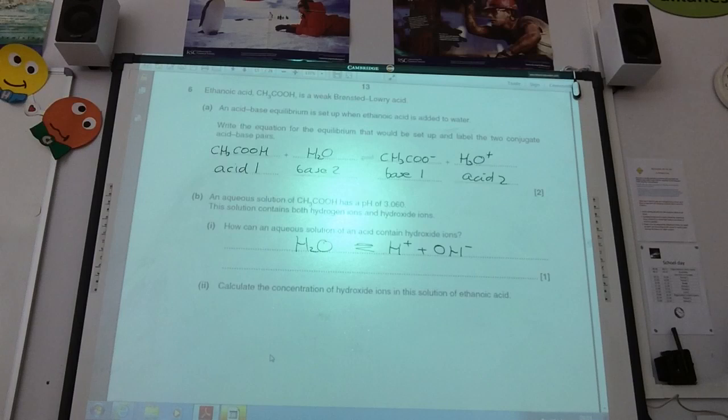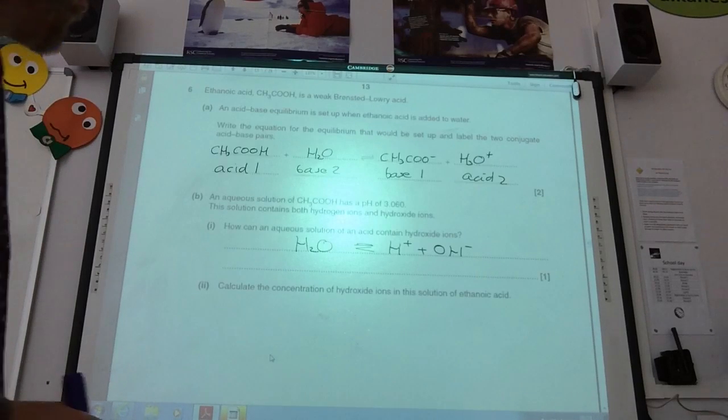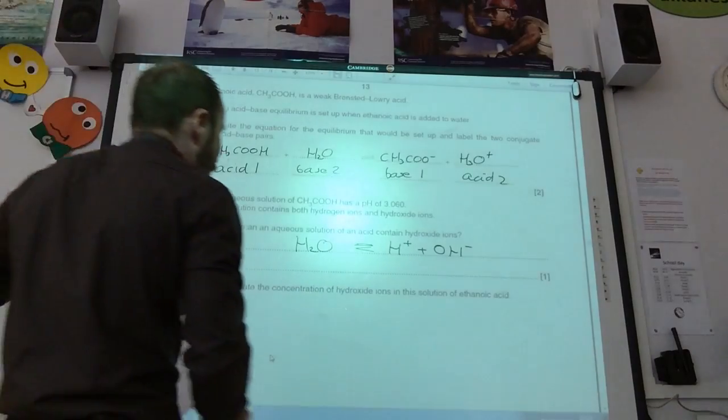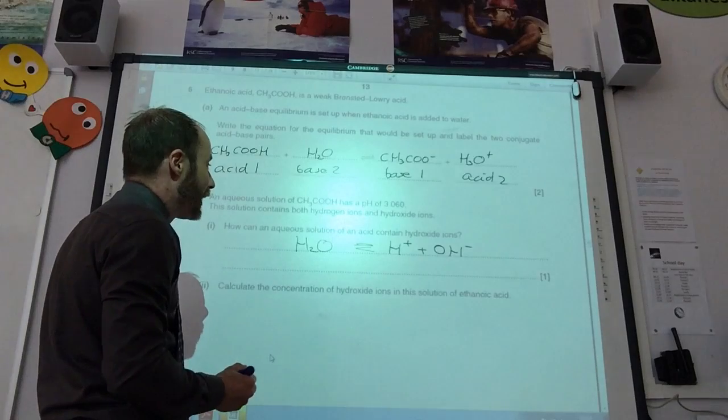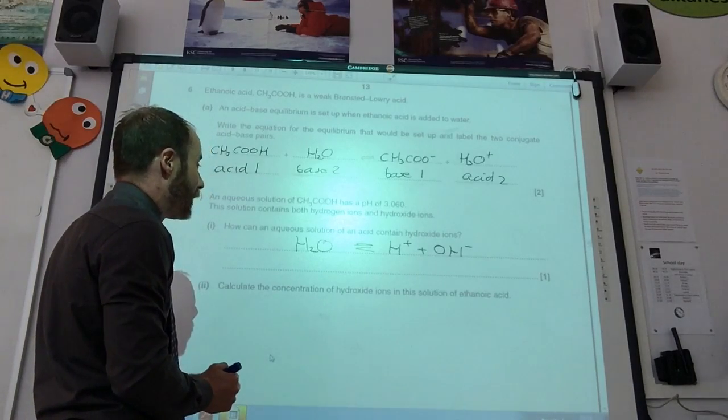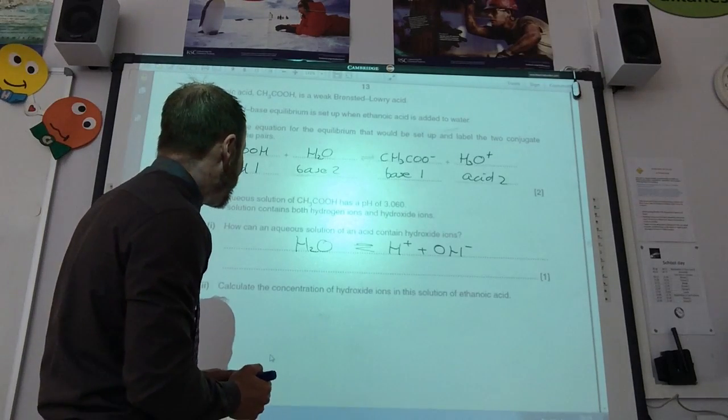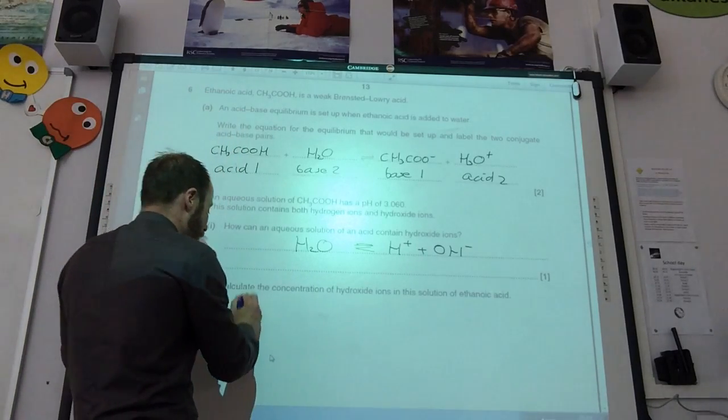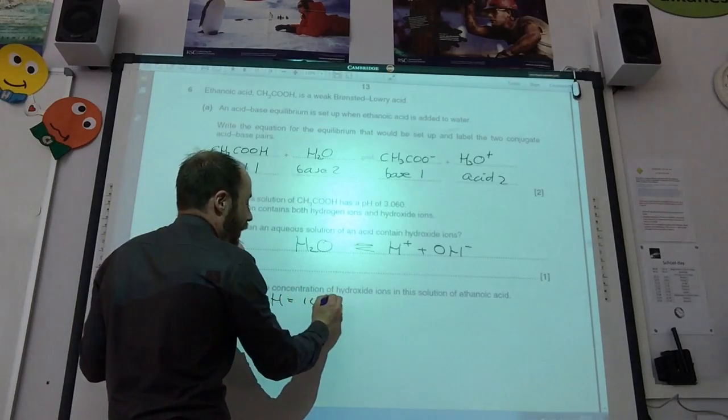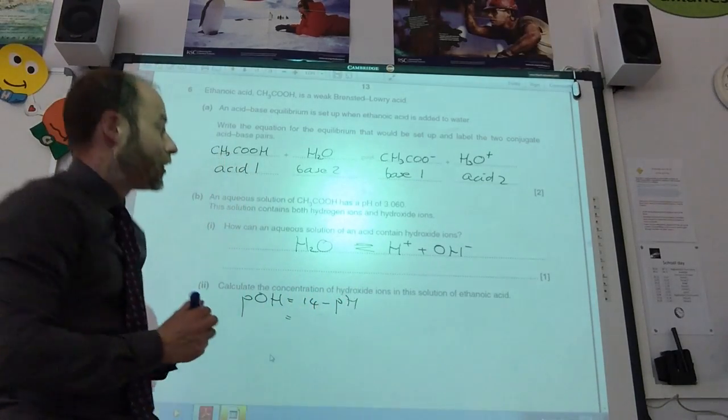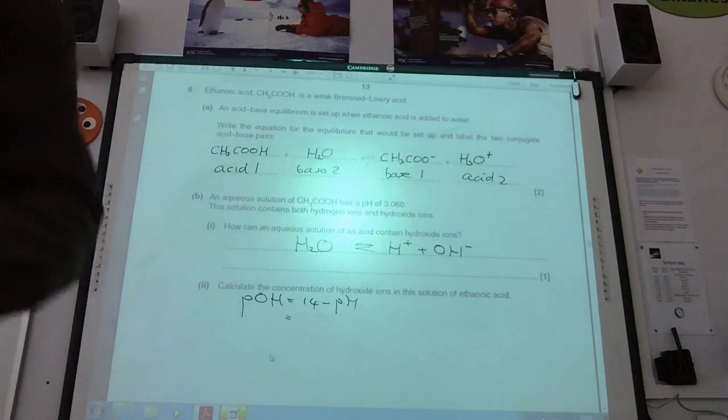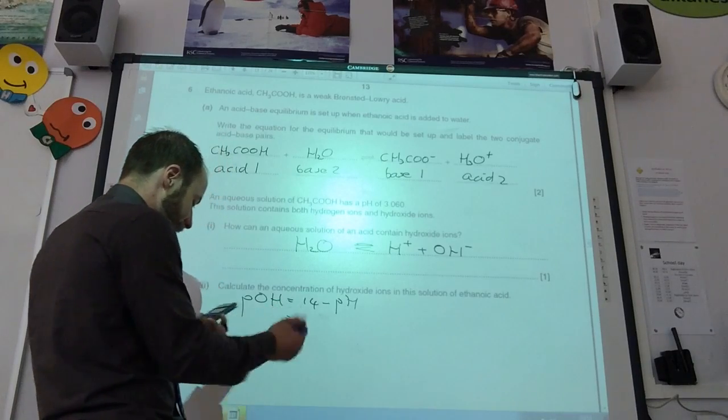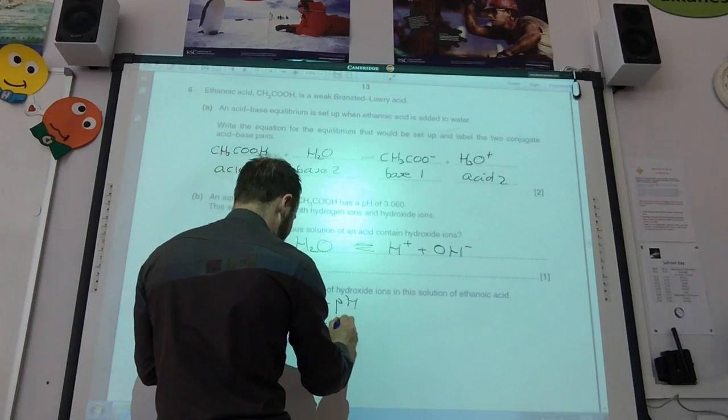Calculating the concentration of hydroxide ions in this solution of ethanoic acid. So what have they told me? They told me the pH. If I know the pH, I can work out the POH. The POH is 14 minus the pH, so that's going to be 14 minus 3.06, which comes to 10.94.